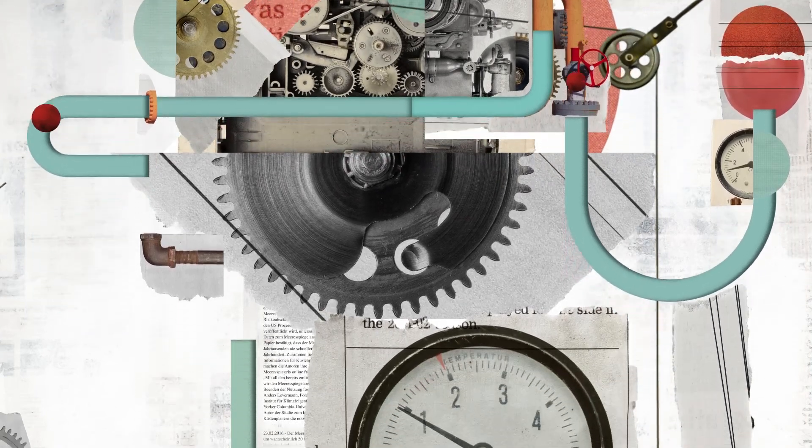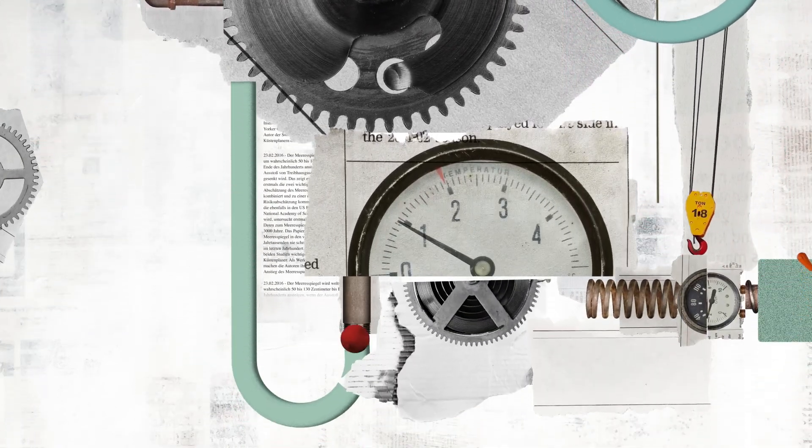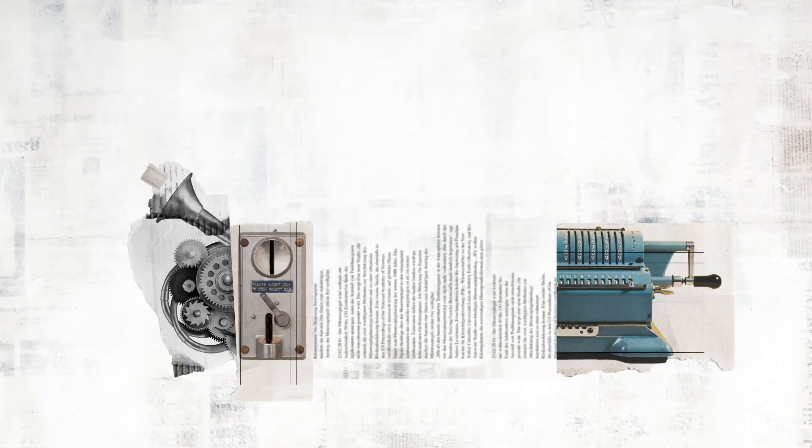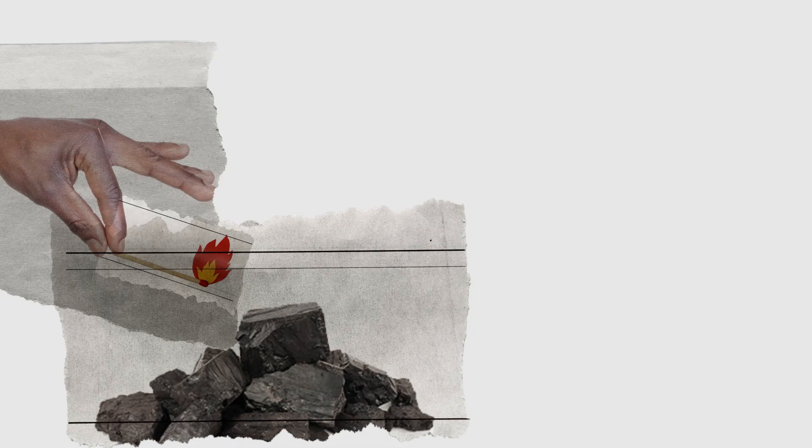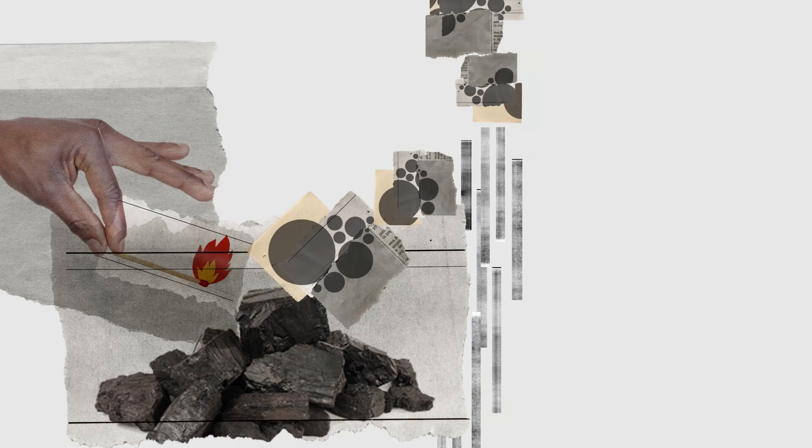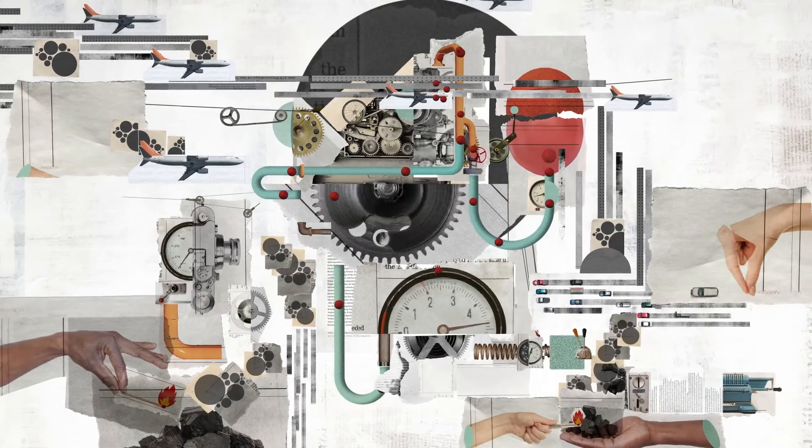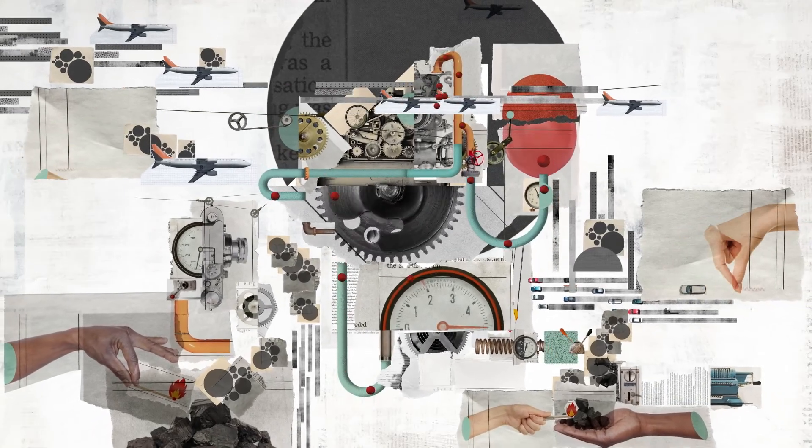If our climate were a machine working in perfect synchronicity to make our planet habitable, then the excessive carbon dioxide that we emit would be the loose screw putting it all in jeopardy. But what does that mean?